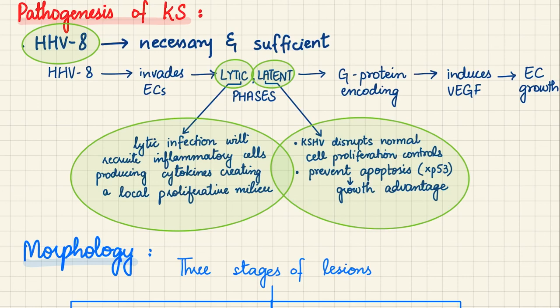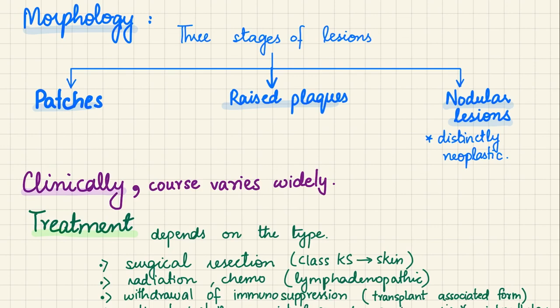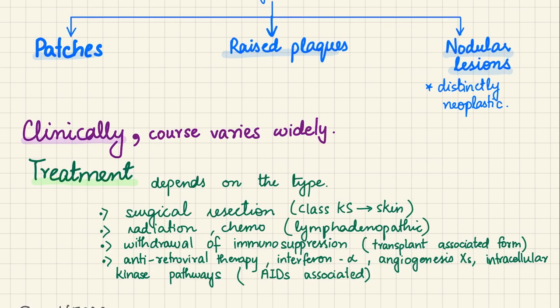Morphologically, Kaposi's sarcoma progresses through three stages: patches, which become raised plaques, and then nodular lesions — the stages at which they are distinctly neoplastic. The clinical course varies widely depending on the type of lesion present.